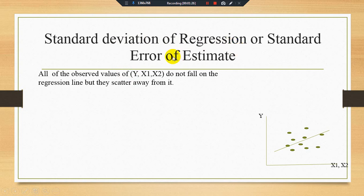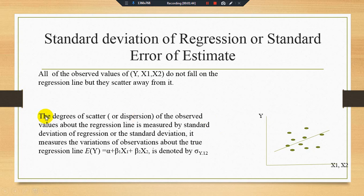The difference between the observed values and the estimated regression line is normally known as the dispersion. The standard deviation of regression, or standard error of estimates, gives us information about how much scatterness or dispersion exists between the observed and estimated regression line. It measures the variation of observations about the true regression line. Here we find E(y) equal to alpha plus beta1·x1 plus beta2·x2, and it is denoted by sigma y·12.